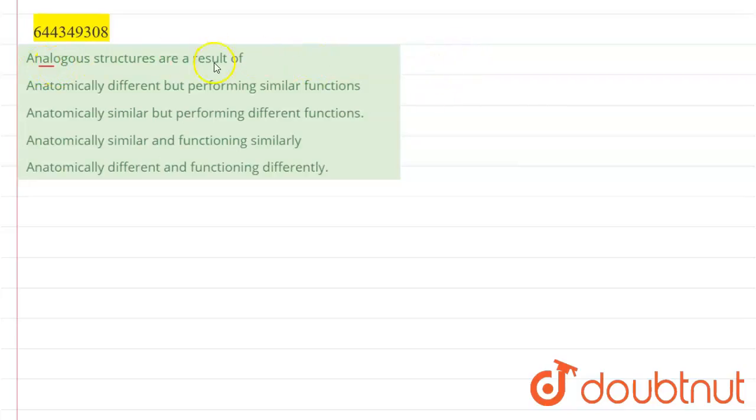Analogous structures are a result of evolution. We see two kinds of structures: analogous structures and homologous structures. Analogous structures are anatomically different - that is, their structure is different - and they do not share a common ancestry.